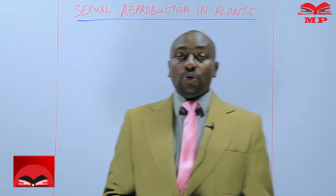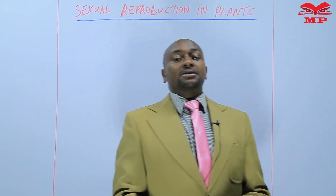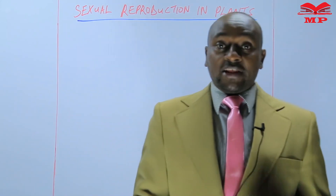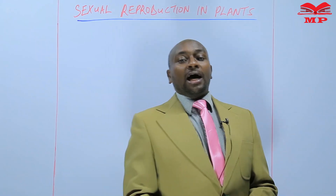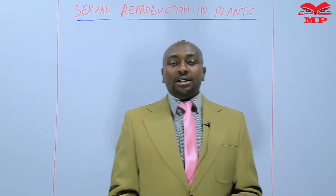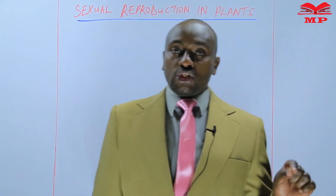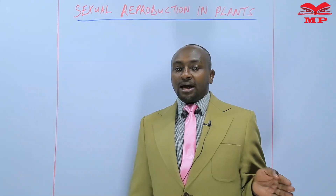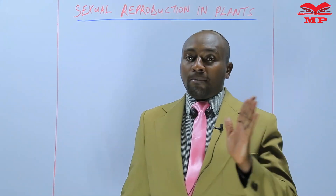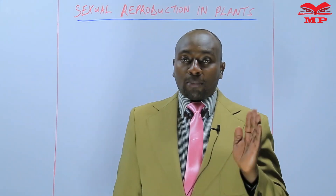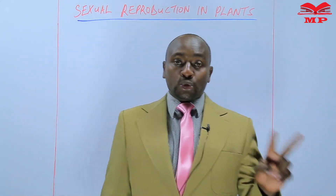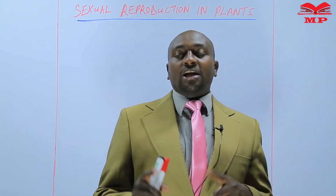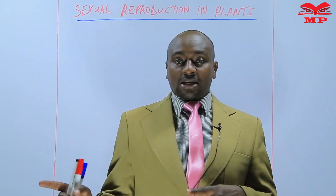Last lesson we discussed the types of gynoecium, and we saw that we have two main types of gynoecium: monocarpous and polycarpous. Polycarpous is further divided into two: apocarpous and syncarpous.